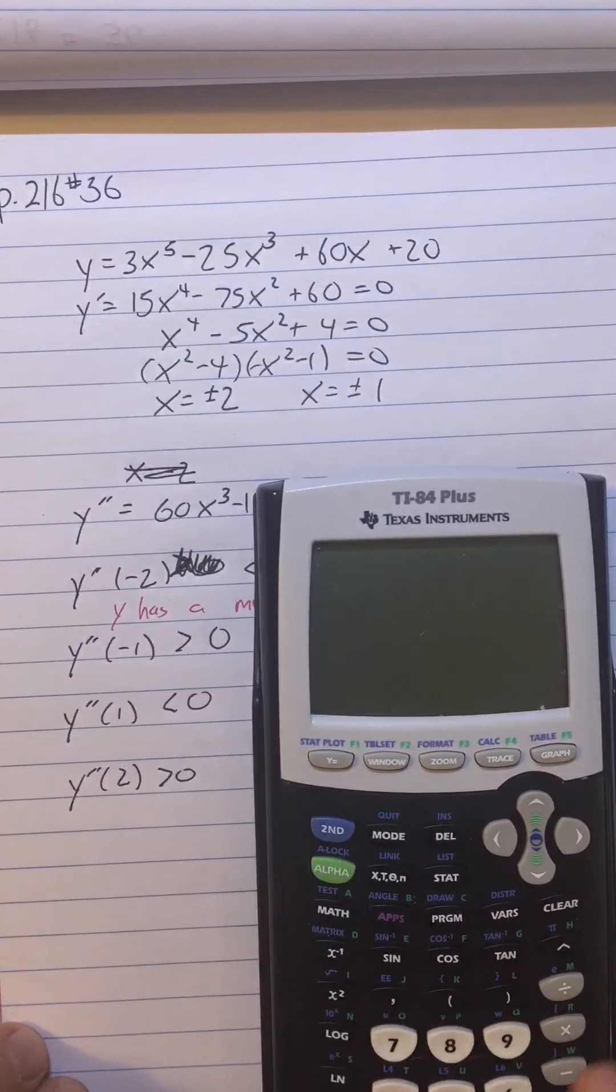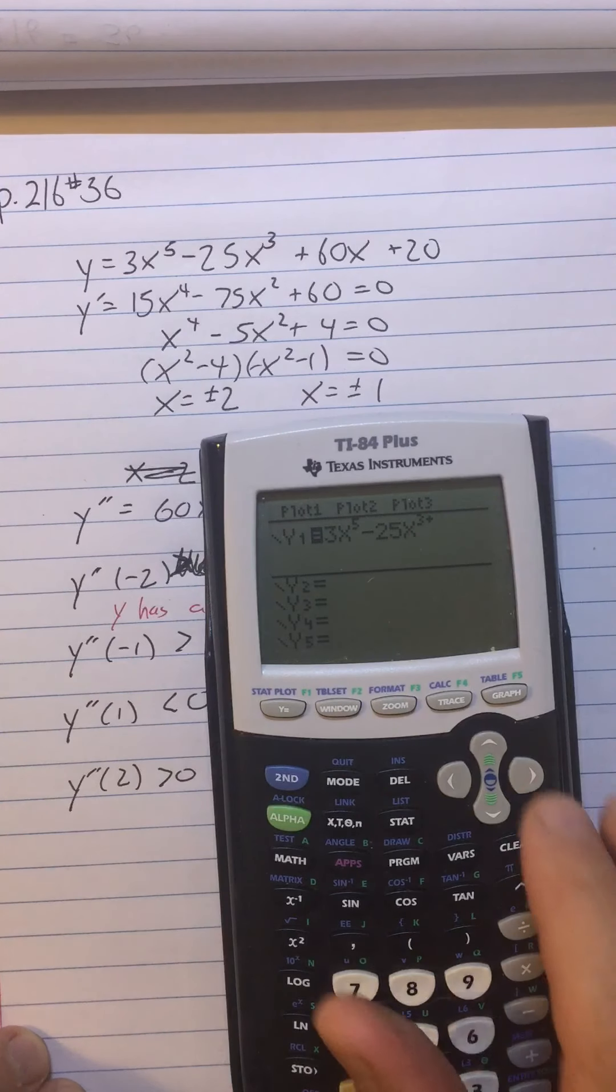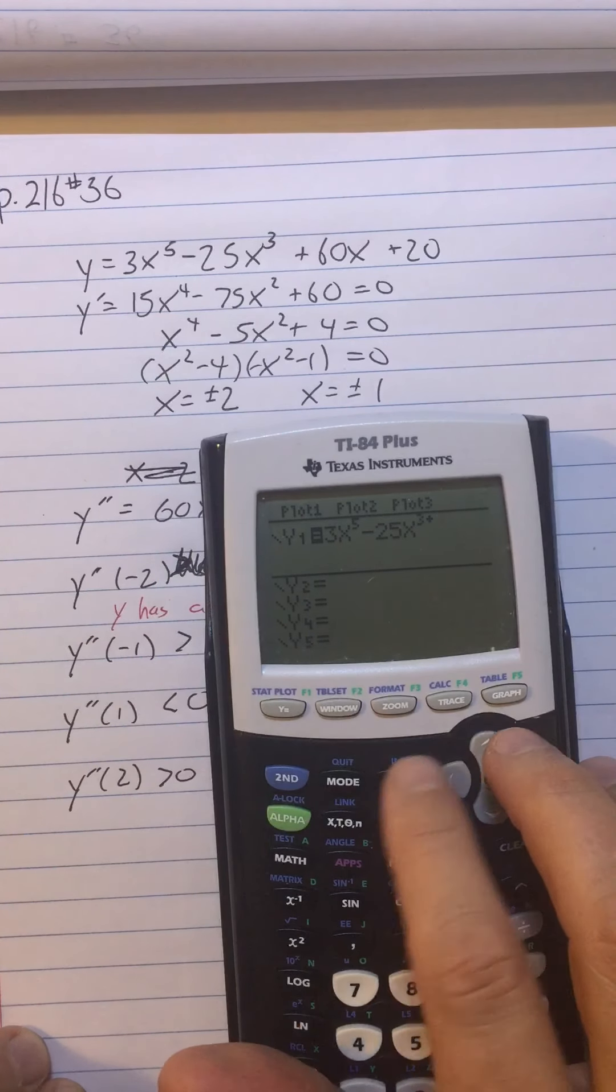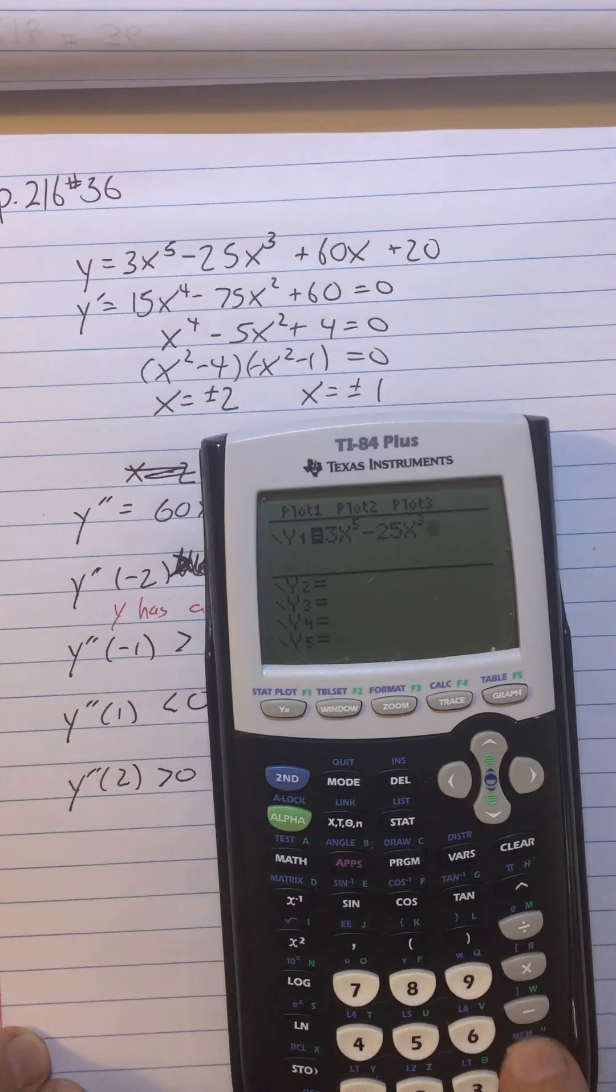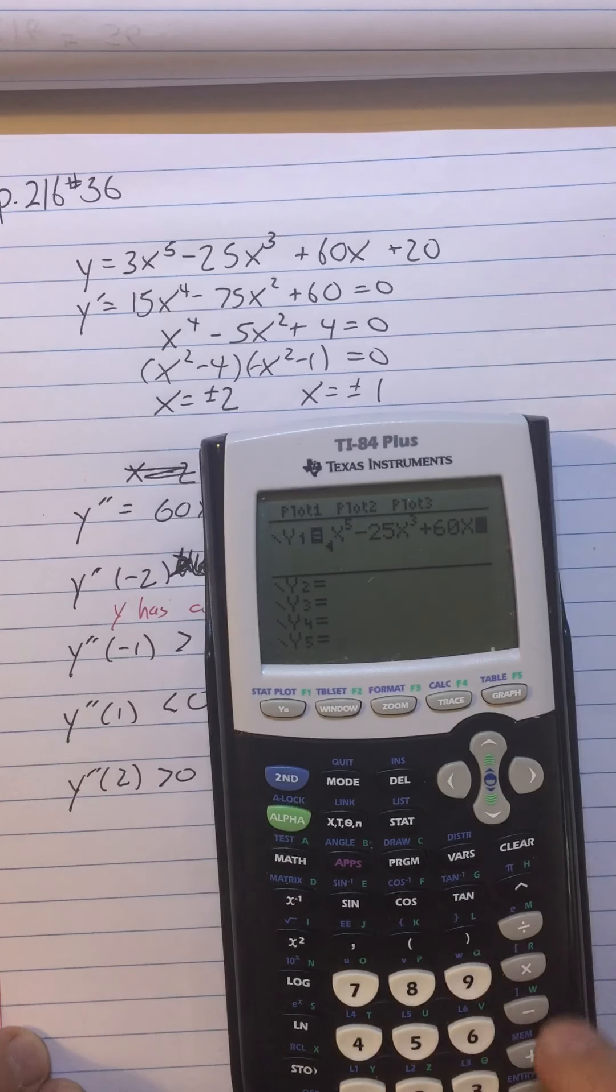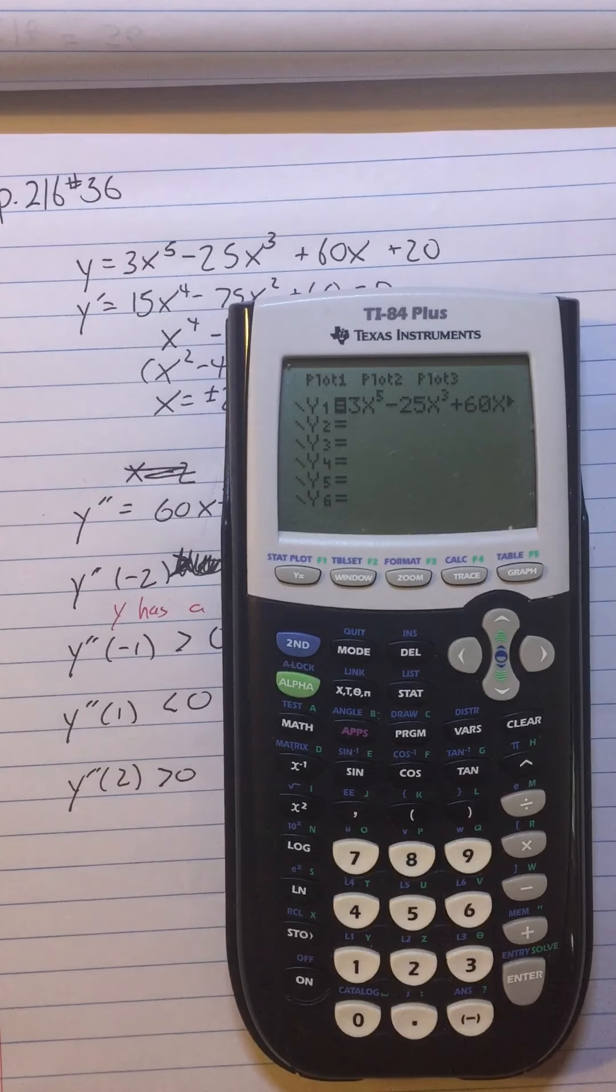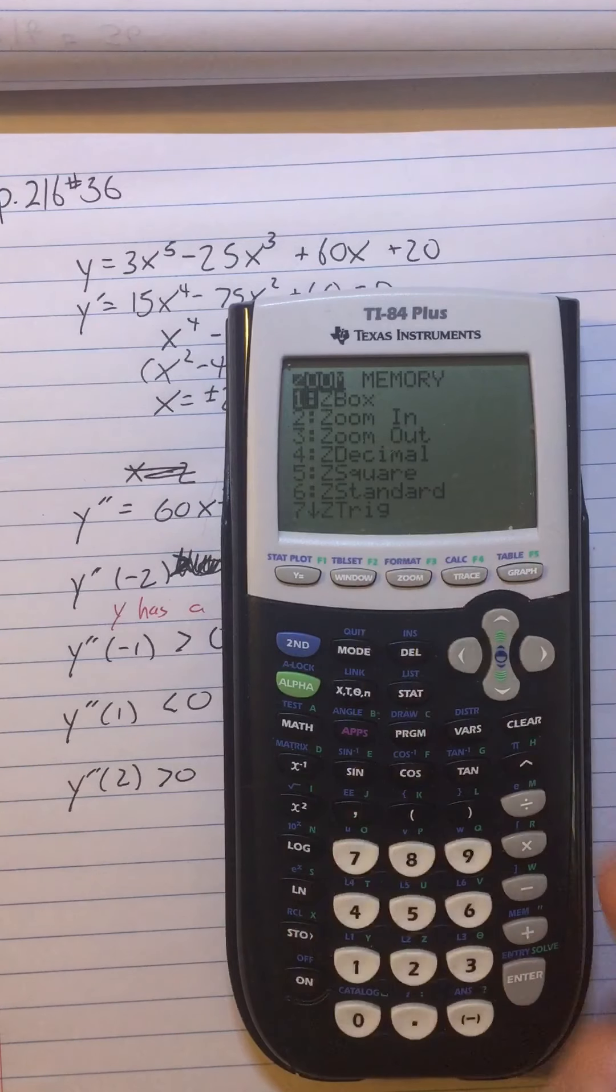Probably the easiest way to do that is going to be to write as a function. So let's clear this. I was trying to avoid using the calculator, but I don't want to do all these values by hand. So 3x⁵ - 25x³ + 60x + 20.